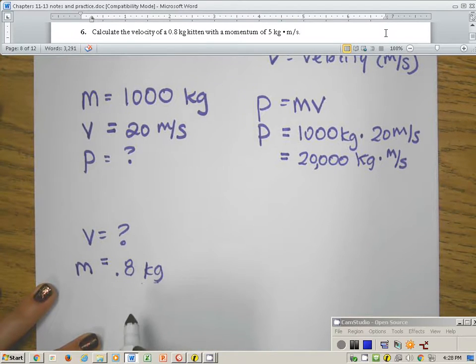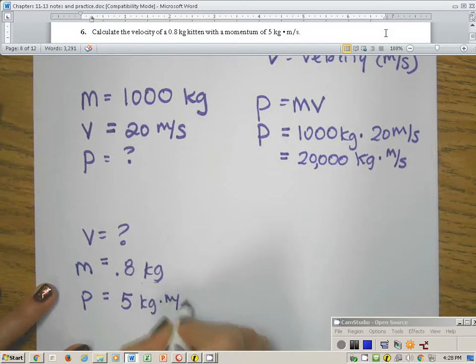And the cat, for whatever reason, has a momentum, that's a p, of 5 kilogram meters per second.